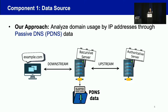For the first component, our approach is to analyze domain usage by IP addresses through passive DNS data. Passive DNS data is the DNS traffic we collect from recursive resolvers. DNS is known to be widely used in both academia and industry, making it a more transparent and accessible top list data source. Umbrella also uses passive DNS for their top list construction, so PDNS can help us build a general ranking method.